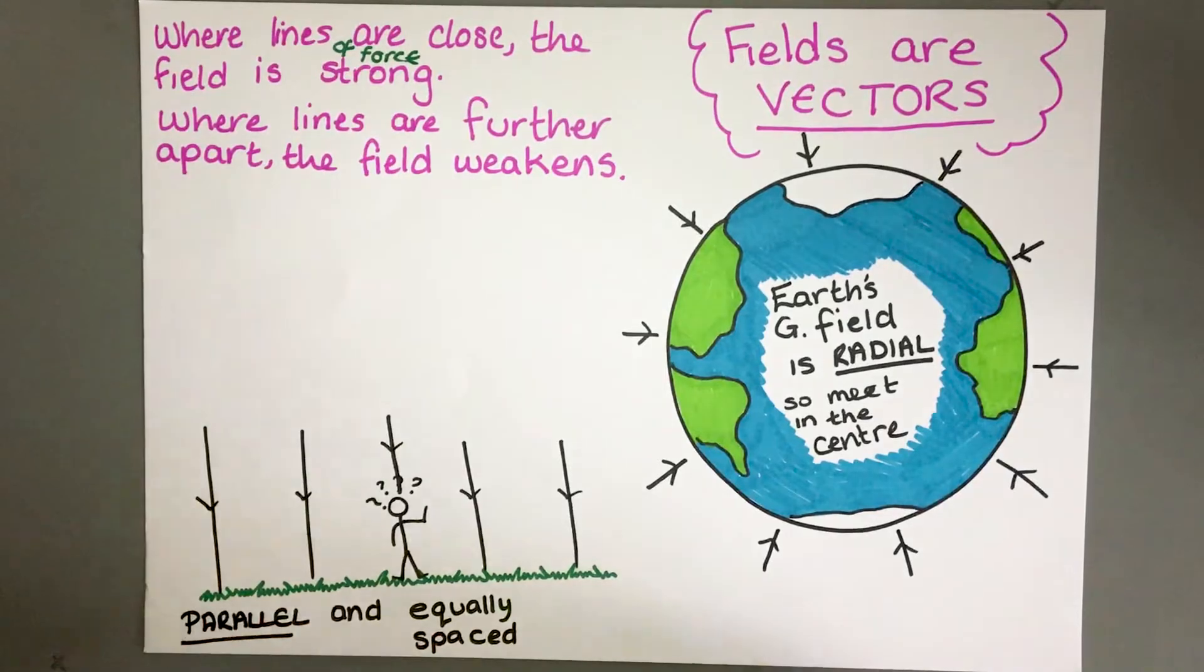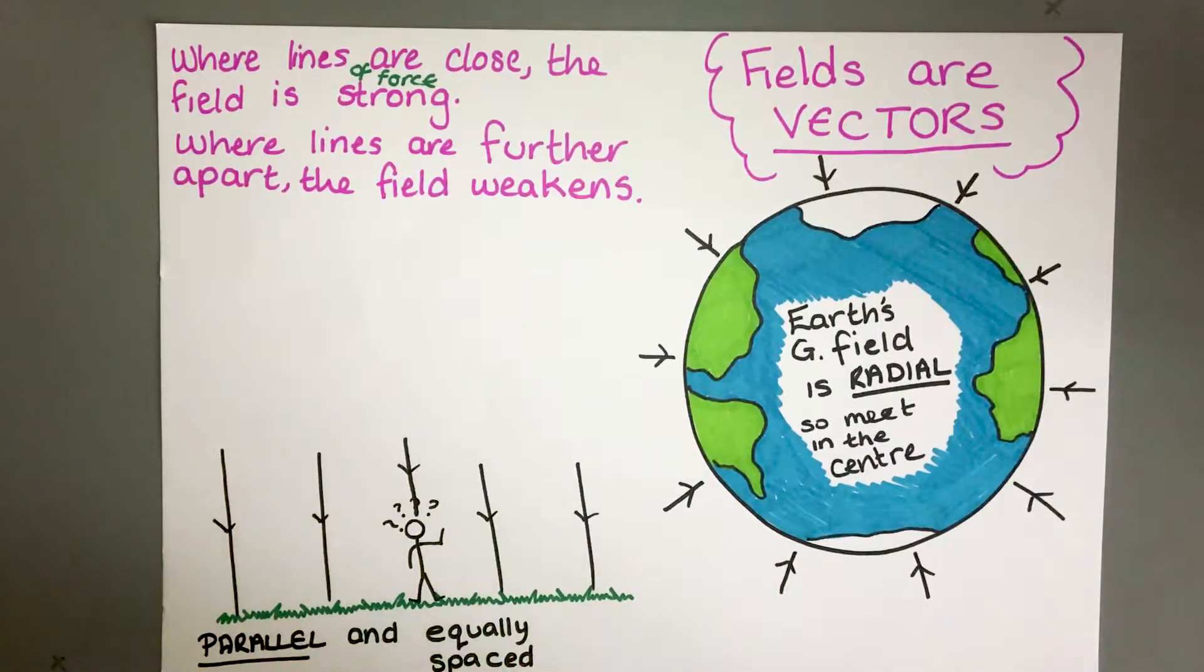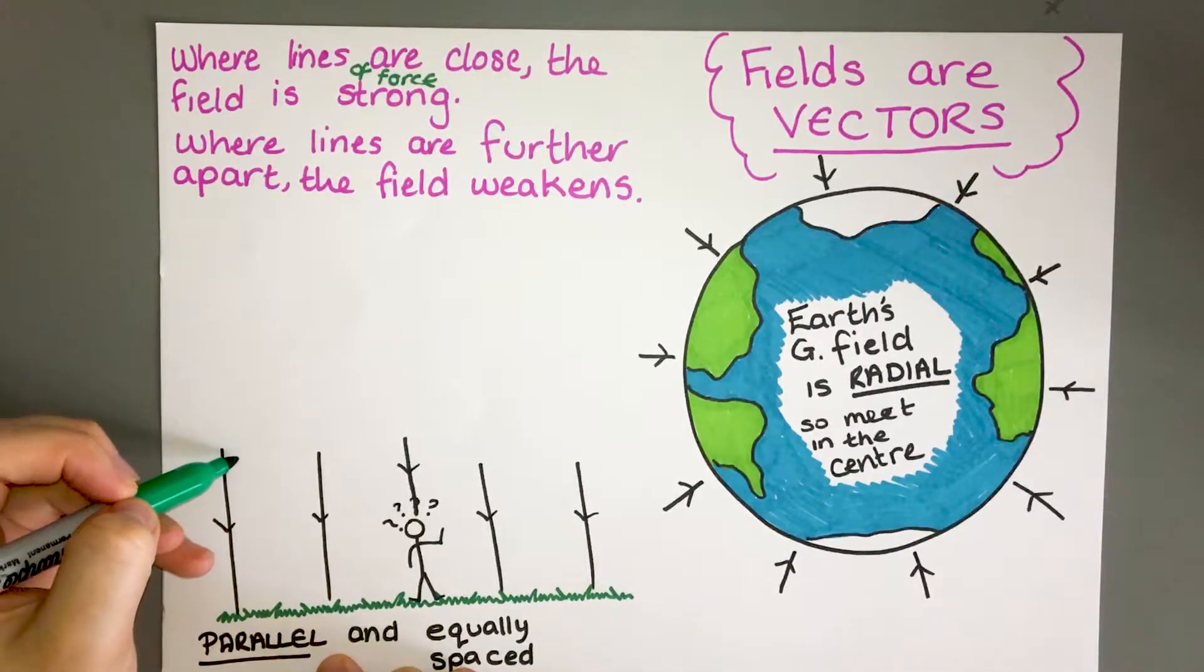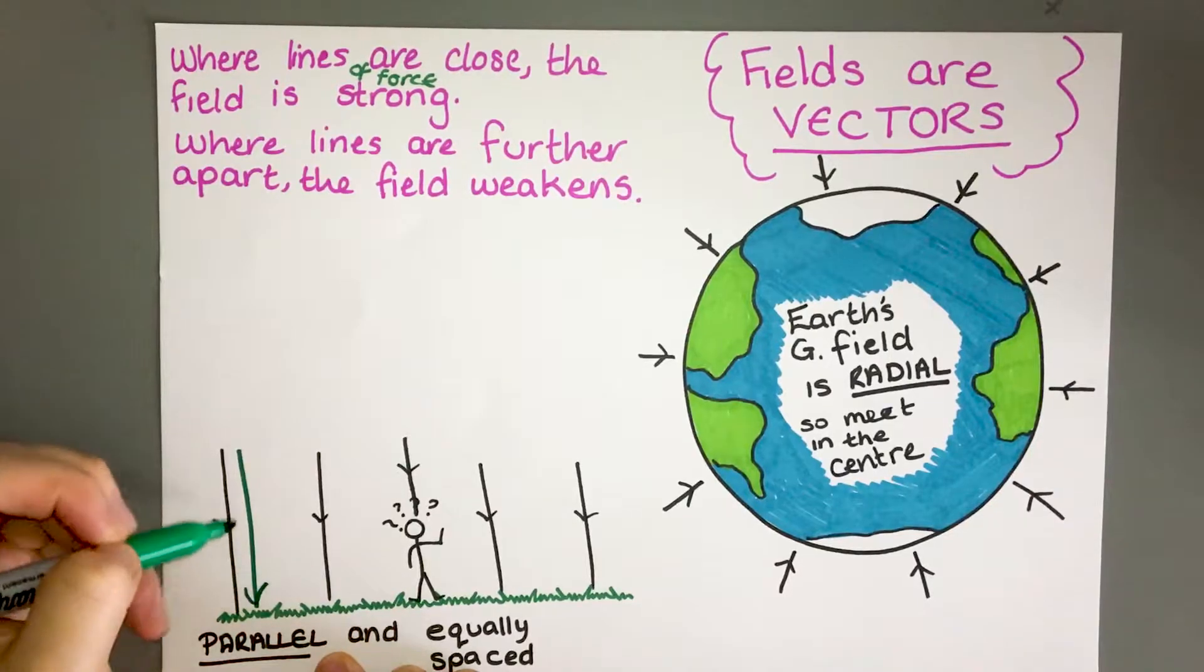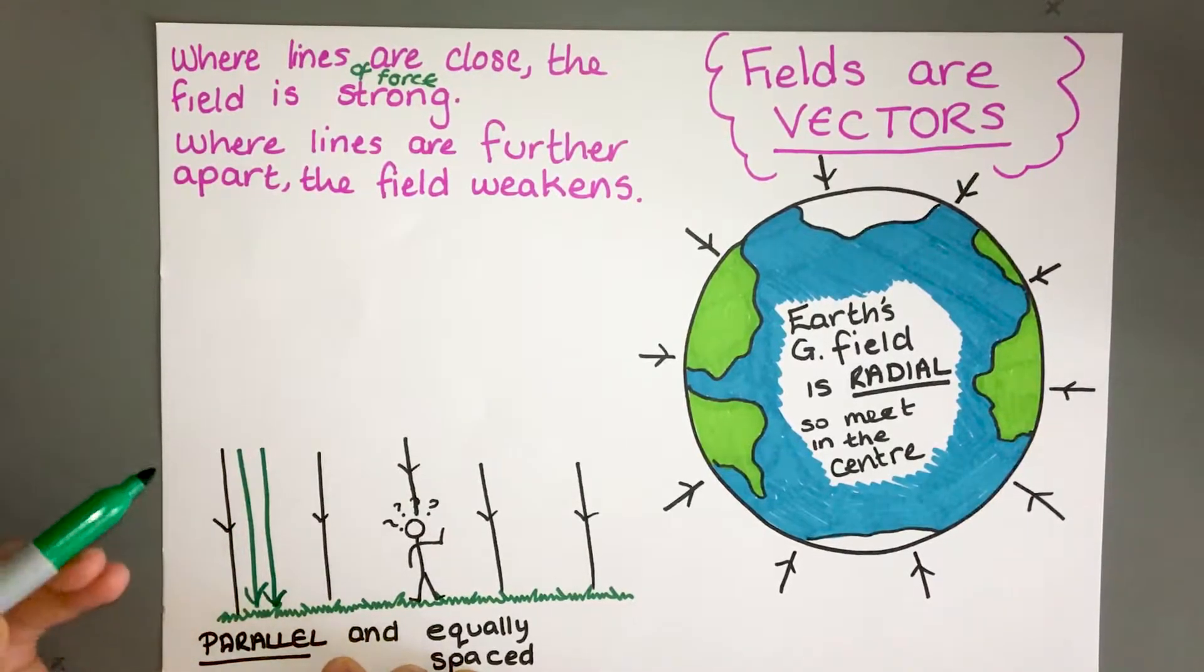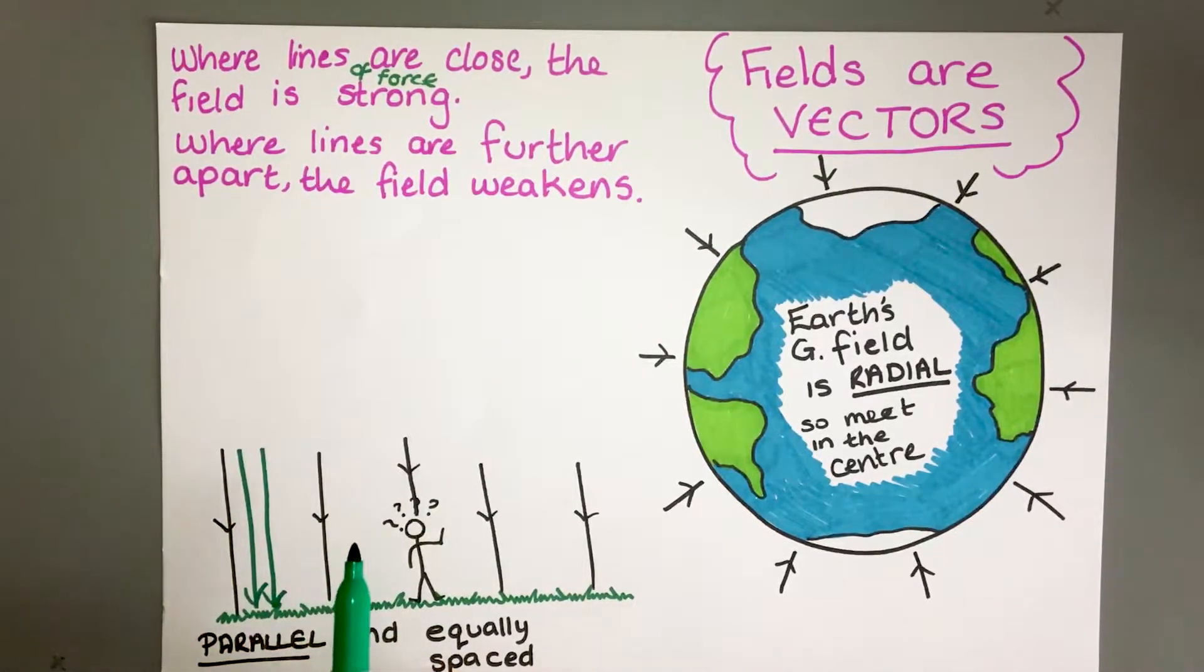Where those lines of force are very close together it means the field is strong, similar to contour lines on a map. Where the contour lines are close together the mountain is very steep. If the lines are close together on a field diagram like this it means that it is very strong. If they're further apart it means it is weaker.